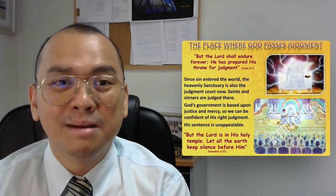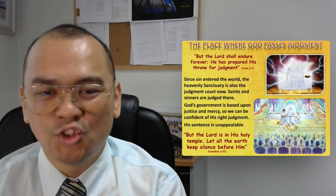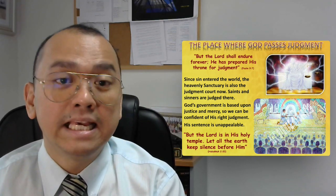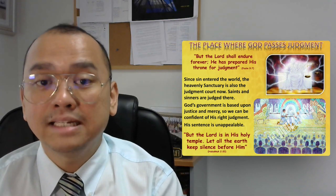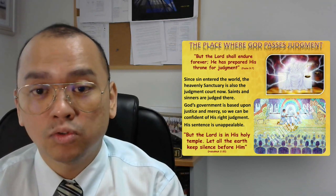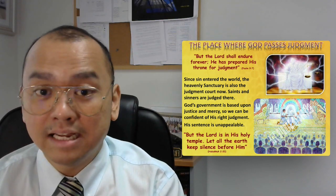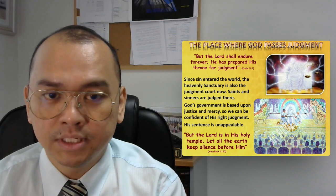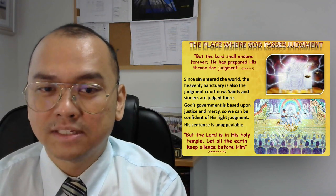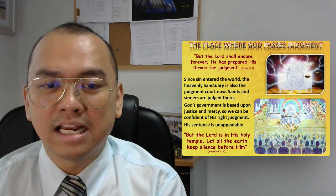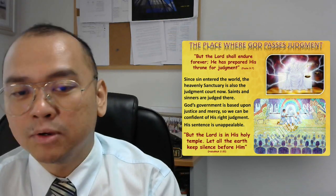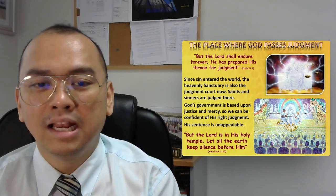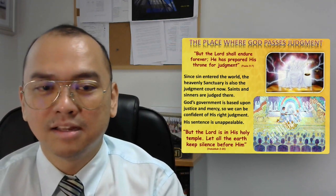The heavenly sanctuary is also the place where God passes judgment. In Psalm 9, verse 7, the Bible says: But the Lord shall endure forever. He has prepared His throne for judgment. So since sin entered the world, the heavenly sanctuary is also the judgment court. Saints and sinners are judged there. God's government is based upon justice and mercy so we can be confident of His right judgment. His sentence is unappealable. In Habakkuk 2, verse 20, the Bible says: But the Lord is in His holy temple. Let all the earth keep silence before Him.